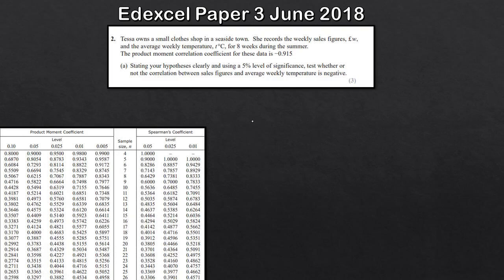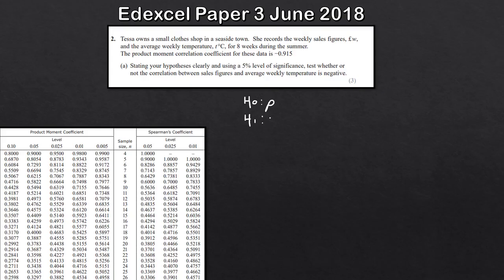This is a hypothesis test, so we should always state our hypotheses first — H0 and H1. The parameter we use when doing a hypothesis test for the product moment correlation coefficient is the Greek letter rho. For H0, we always say that rho is equal to zero.